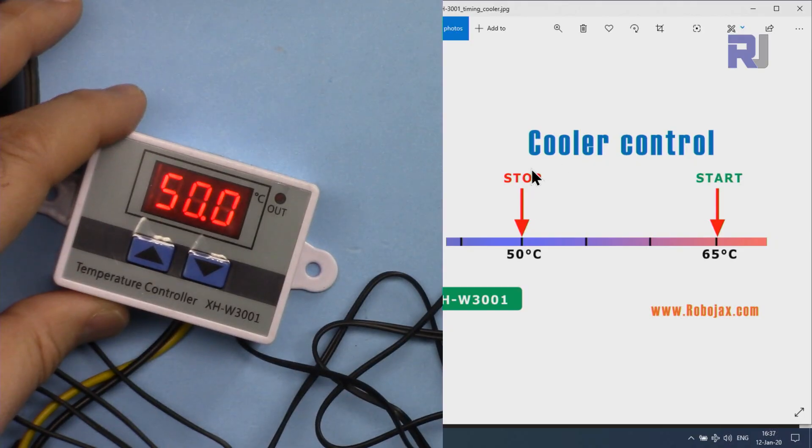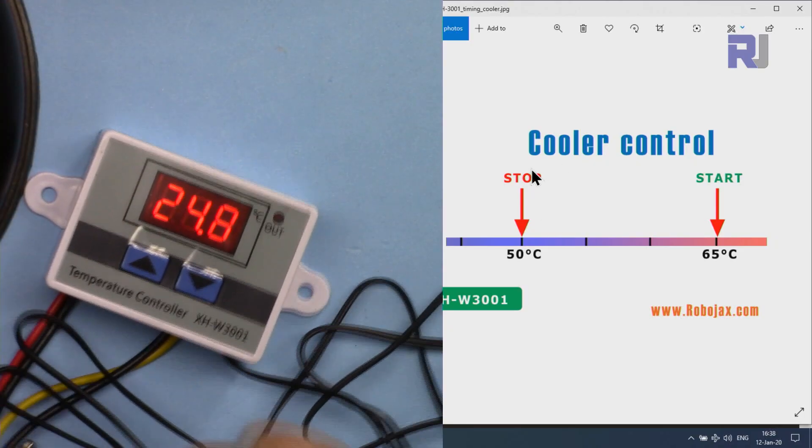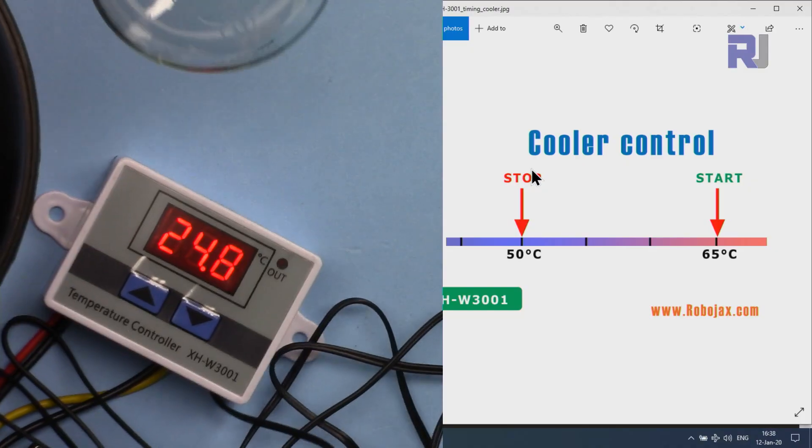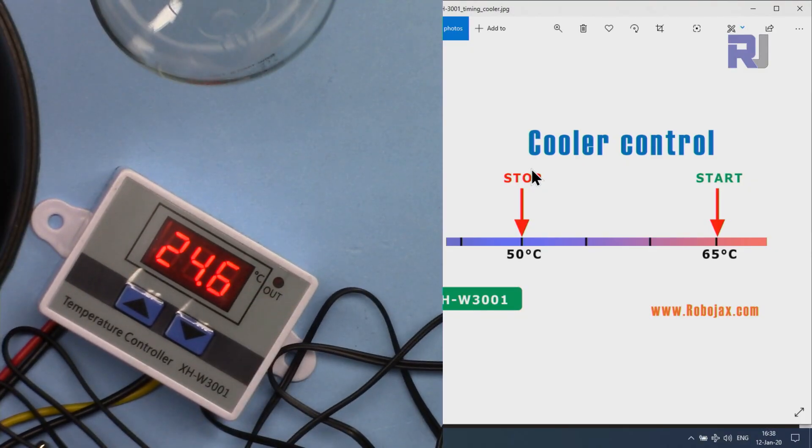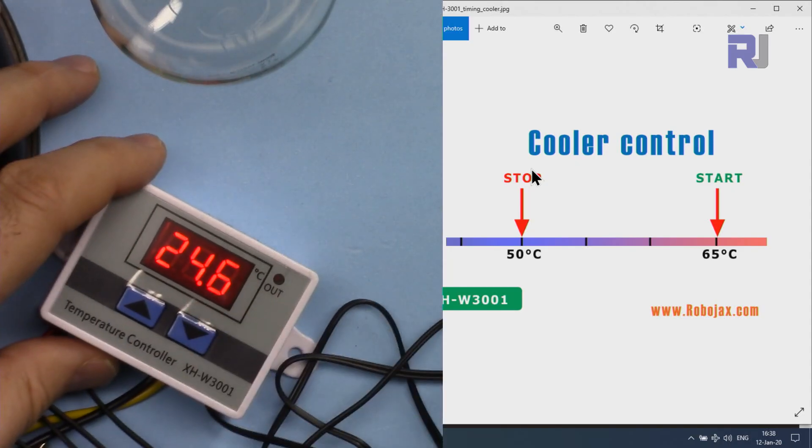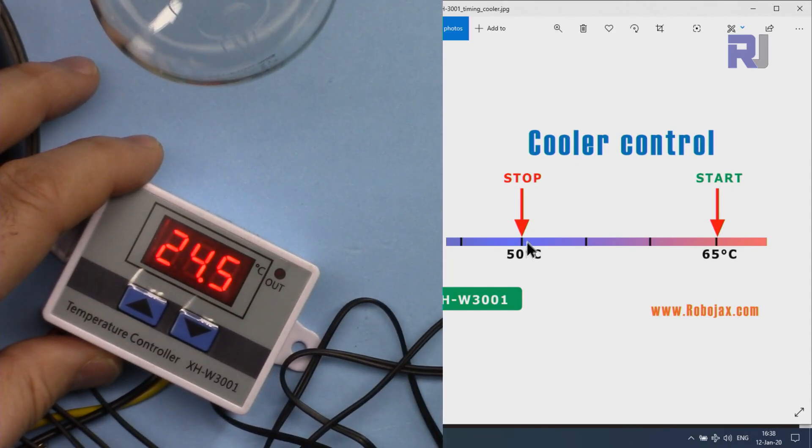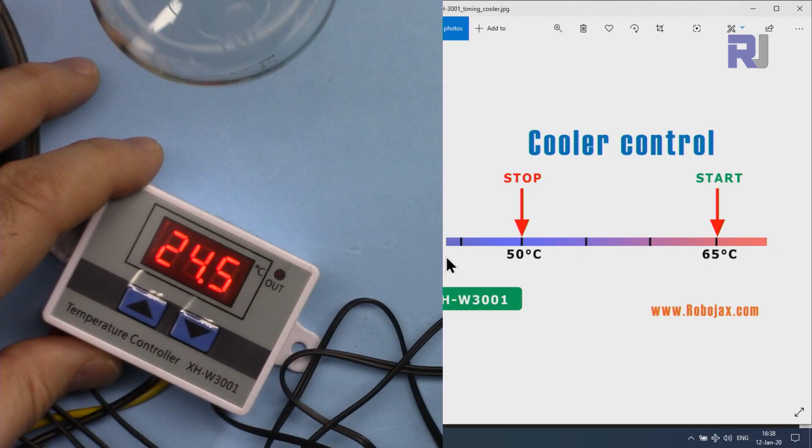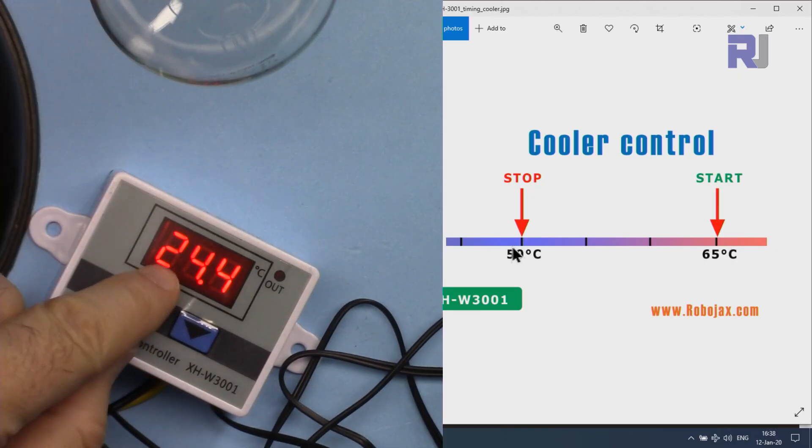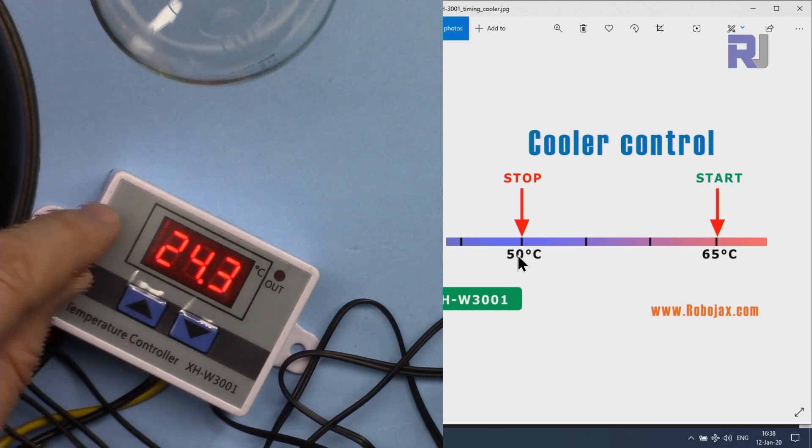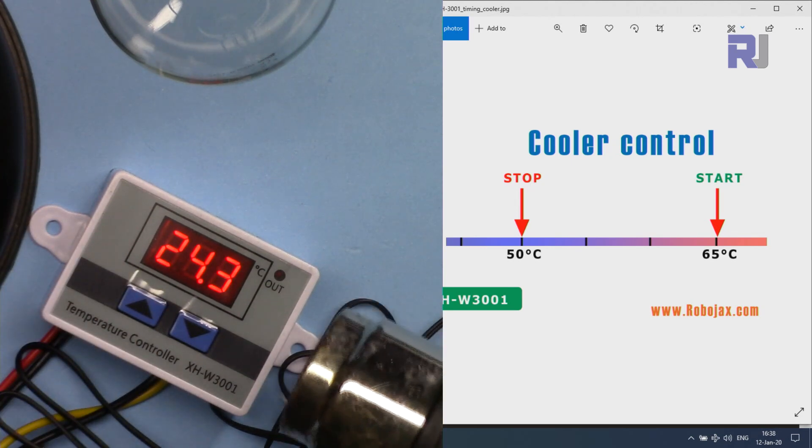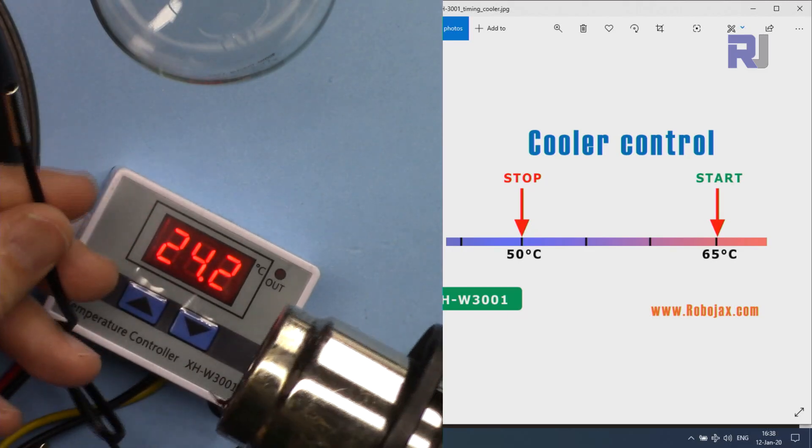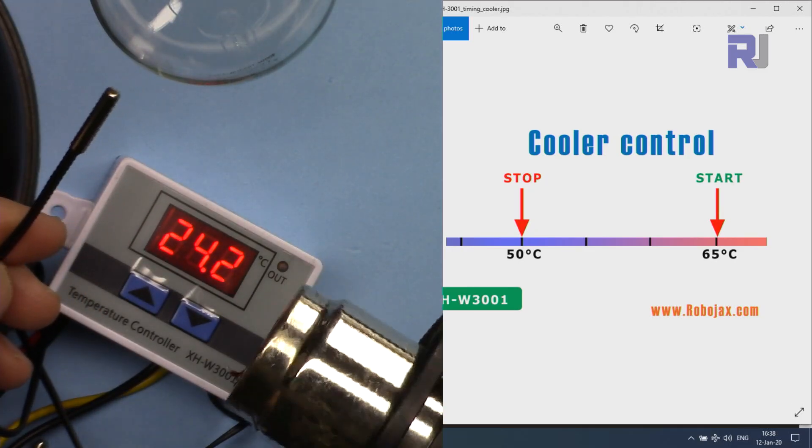And then just give it a few seconds until it blinks out. Now start is 65, stop is 50, and this is how we set it. It will act as a cooler. Now I'm connecting my external load here. Because the output is off, it is off. The job of the cooler is to keep the temperature below 65 and start the cooling at 50. Because now it is below 50, it is not turning on. So I'm going to use my heat gun now, and here at the sensor I'm just applying some heat. Pay attention - the cooler will turn on when the temperature reaches 65.